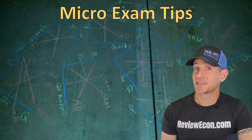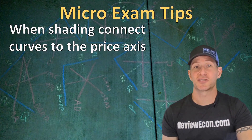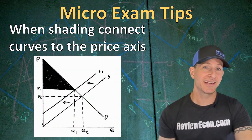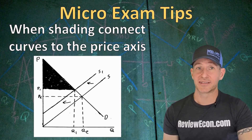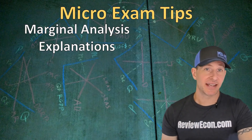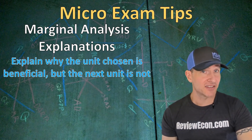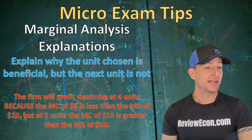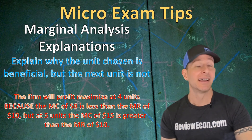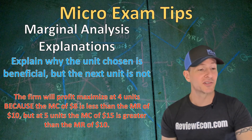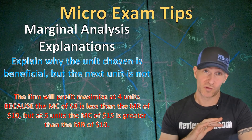A couple of quick tips specifically for the microeconomics exam. When shading areas on your graph, make sure you connect your demand and supply curves to the axis — for example, when shading consumer surplus after a supply curve shift, the demand curve should connect to the axis to create a clear triangle. Also, when it comes to marginal analysis explanations, explain why the unit you chose is beneficial and why the next unit would not be. For example: 'The firm profit-maximizes at four units because marginal cost of $8 is less than marginal revenue of $10, but at five units marginal cost of $15 is greater than marginal revenue of $10.'